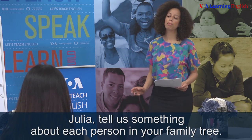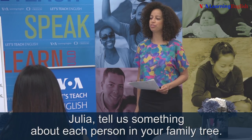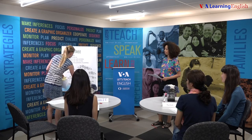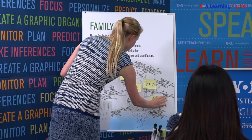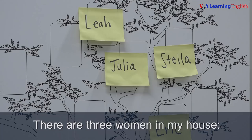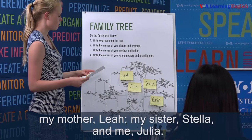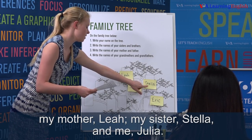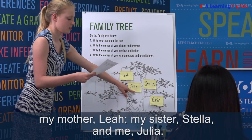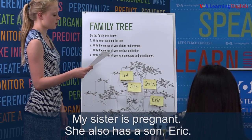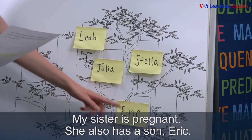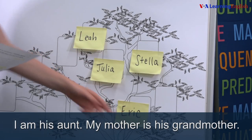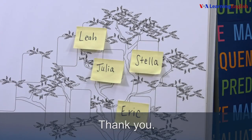Julia, tell us something about each person in your family tree. There are three women in my house: my mother Leah, my sister Stella, and me, Julia. My sister is pregnant. She also has a son, Eric. I am his aunt. My mother is his grandmother. Thank you.